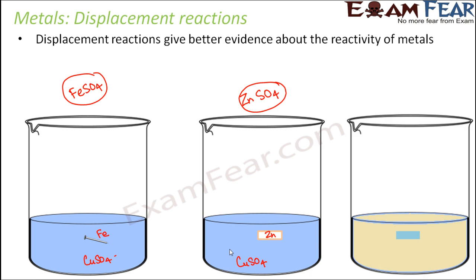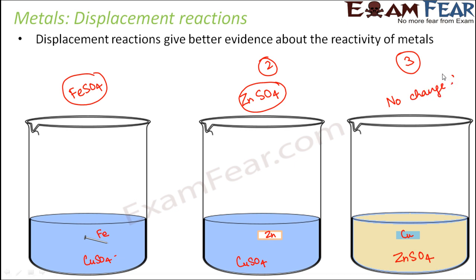Now consider the opposite scenario: instead of copper sulfate solution, take zinc sulfate solution and place a small piece of copper in it. This is the reverse of the previous experiment — there the metal was zinc and the solution was copper sulfate; here the solution is zinc sulfate and the metal is copper. In this case, no change in color is observed, meaning no reaction is taking place. If a reaction occurred, a new compound would form and there would be a color change. But here there is no reaction — which is what the concept of displacement reactions explains.